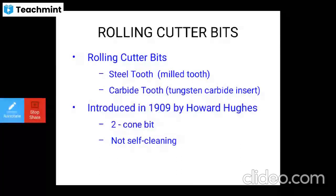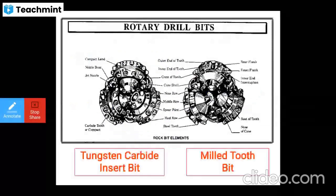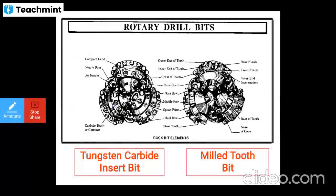Rotary drill bits come in two main types, as you can see in this schematic diagram: the tungsten carbide insert bit and the milled tooth bit. We can also see the rock bit elements.